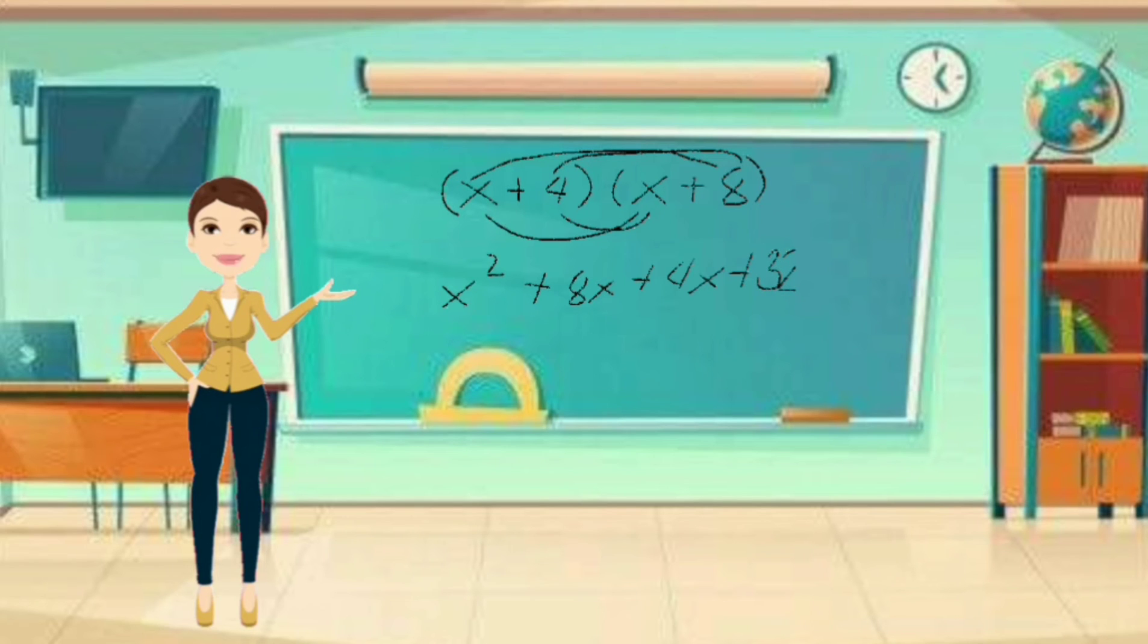We must not forget to combine like terms when possible, so we will get x squared plus 12x plus 32. Easy, right?